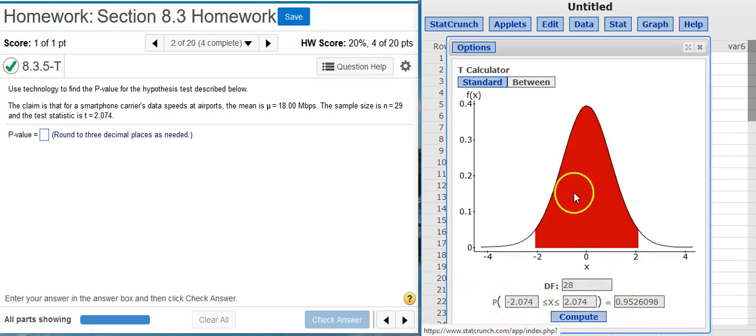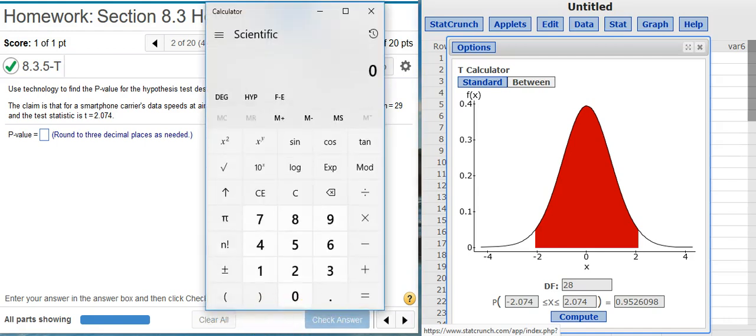Out comes the area in between the tails. Remember that StatCrunch's between option is calculating the area in between the tails, but the p-value is the area of the tails. So I have to take the complement of this area that's between the tails to get the area of the tails. So I'll call up my little calculator here, take one minus this value here.